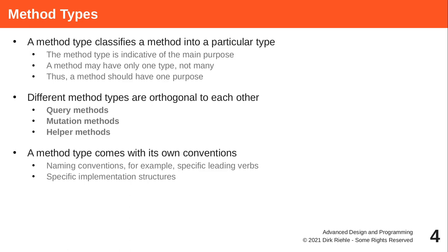These categories are tied to specific naming conventions — conventions of how to write a method. If you know those type-specific conventions, you'll be faster to grasp what a method does when you see it in code. You'll be able to write it faster and are likely to make fewer mistakes. Naming methods correctly and meeting the expectations of other experienced developers is a way of reducing bugs, communicating more effectively in code, and generally writing better software.